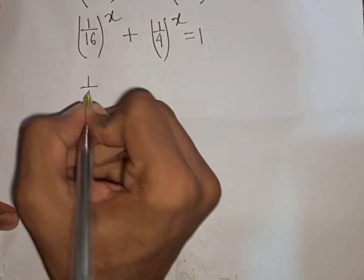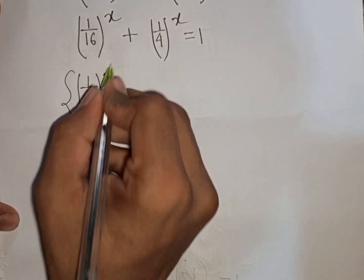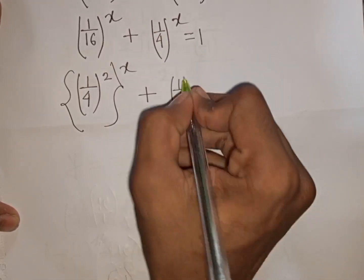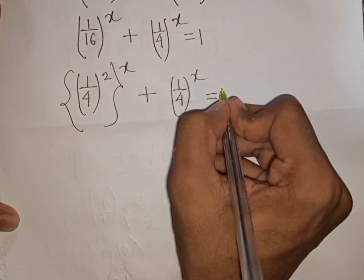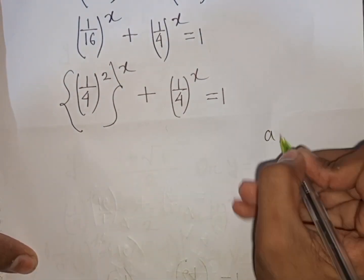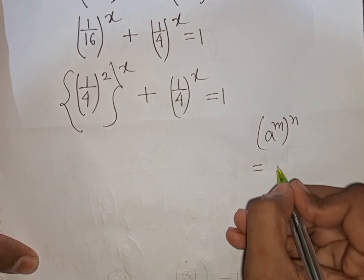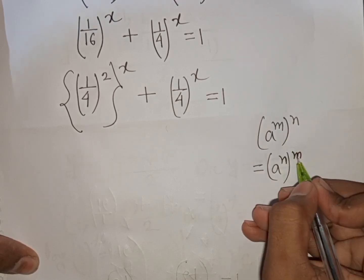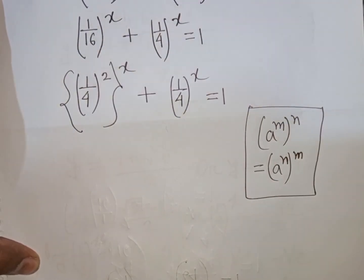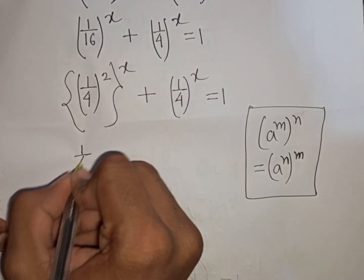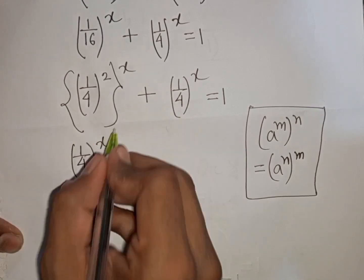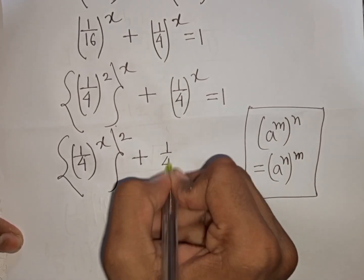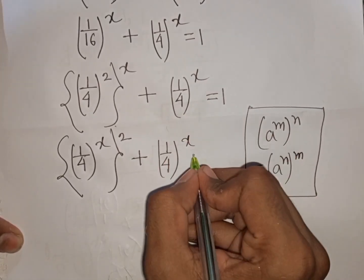Now 1/16 can be written as (1/4)^2. So the first term becomes (1/4)^2 raised to the power x, and we apply the rule a^m raised to power n equals a^(mn), giving us (1/4)^(2x) plus (1/4)^x equals 1.